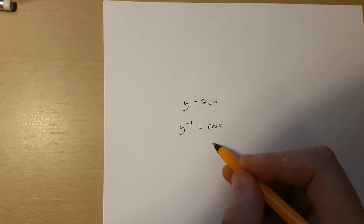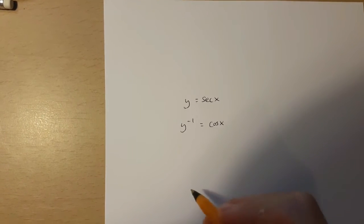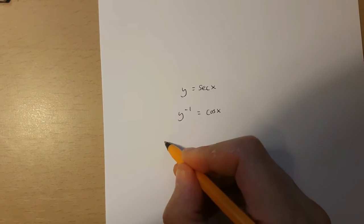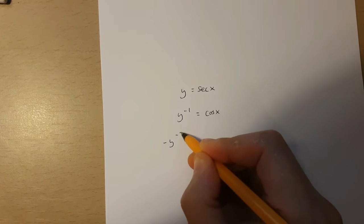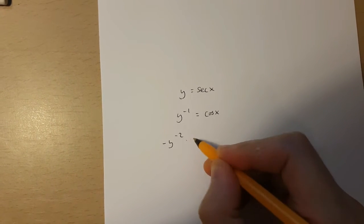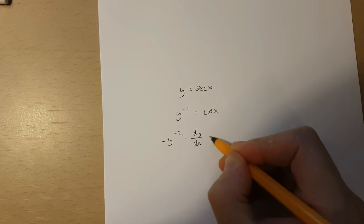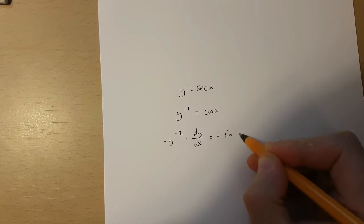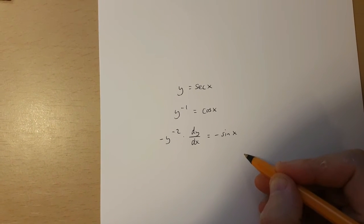Now if I use implicit differentiation over here, I'm going to get minus y to the power of minus 2 times dy over dx is equal to minus sin x.